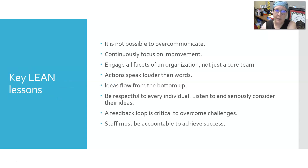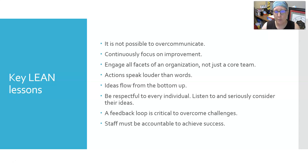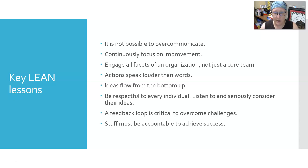Here are some key Lean lessons. One: it's not possible to over-communicate. Two: continuously focus on improvements — we're never done, there's always something to make better. Three: engage all facets of an organization, not just a core team. Four: action speaks louder than words. Five: ideas flow from the bottom up, because people at the bottom are doing the hard work, usually know where the problems are, and often have good creative ideas for solutions. Six: be respectful to every individual and listen to and seriously consider their ideas. Seven: a feedback loop is critical to overcome challenges. Eight: staff must be accountable to achieve success.